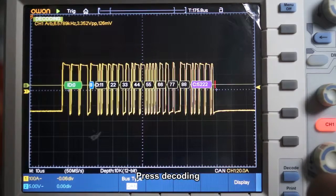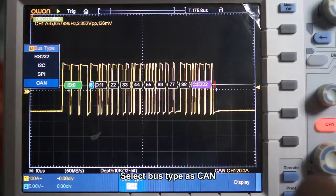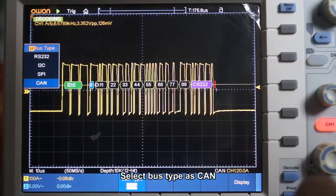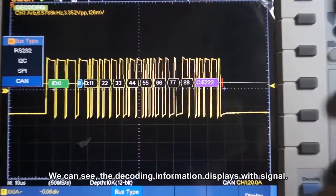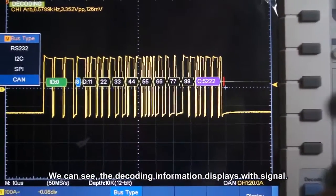Then, we begin to decode. Press Decoding. Select bus type as CAN. We can see the decoding information displayed with signal.